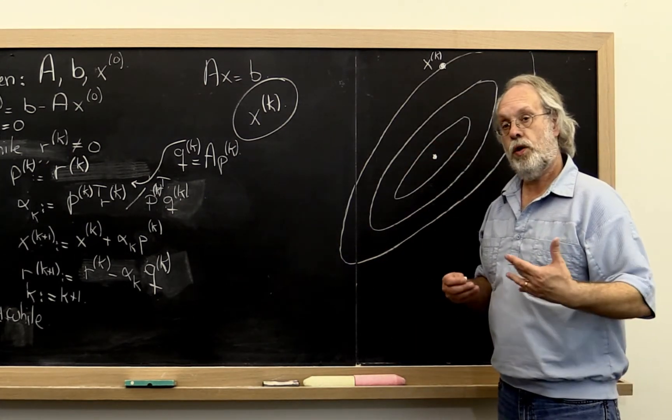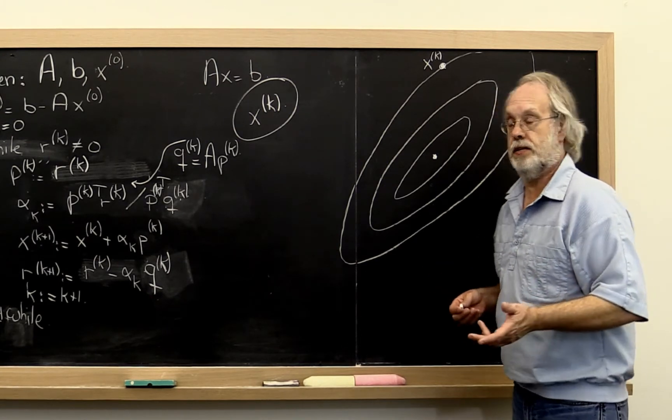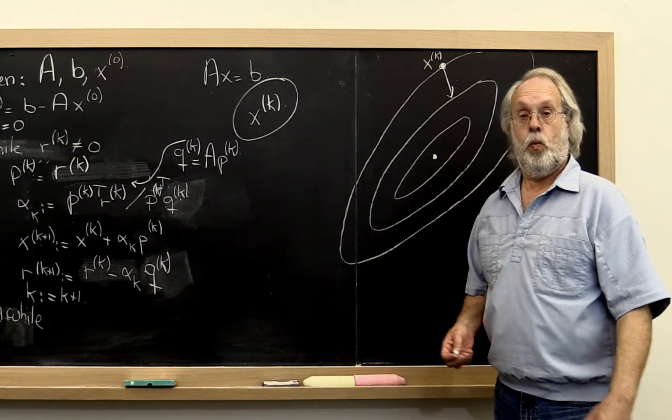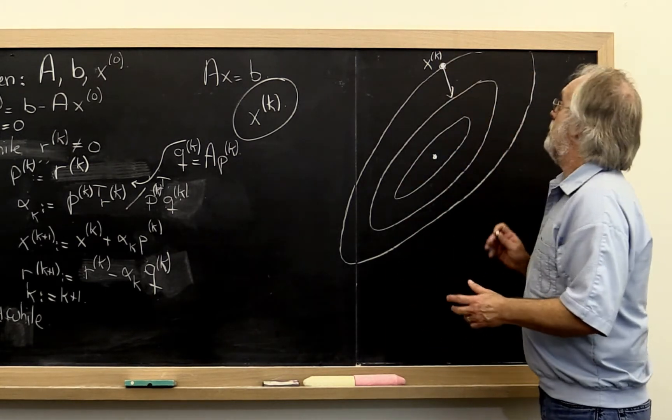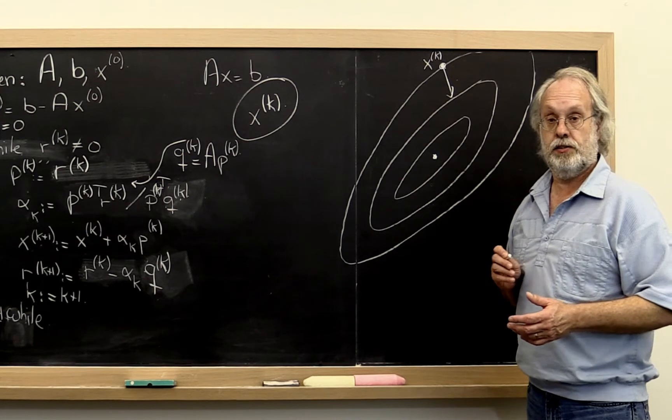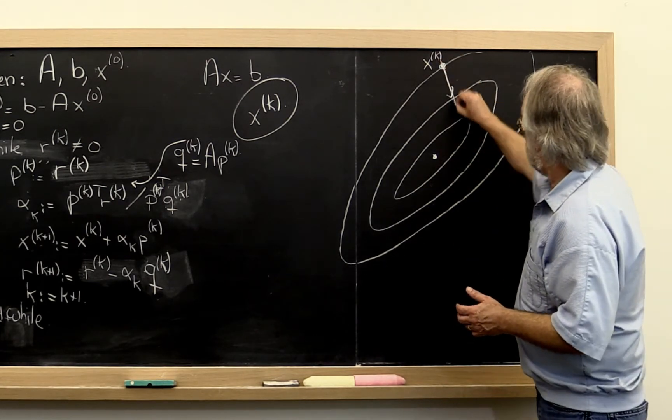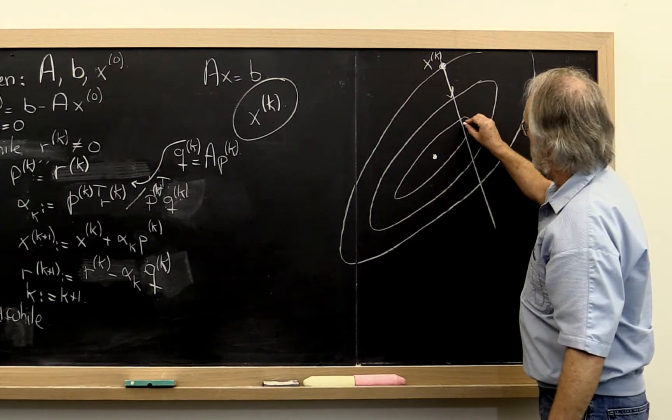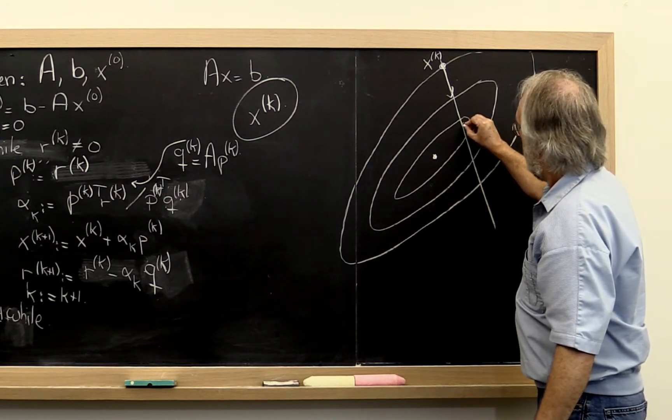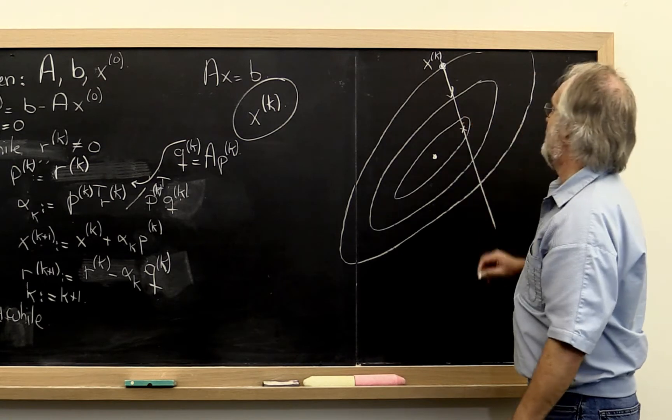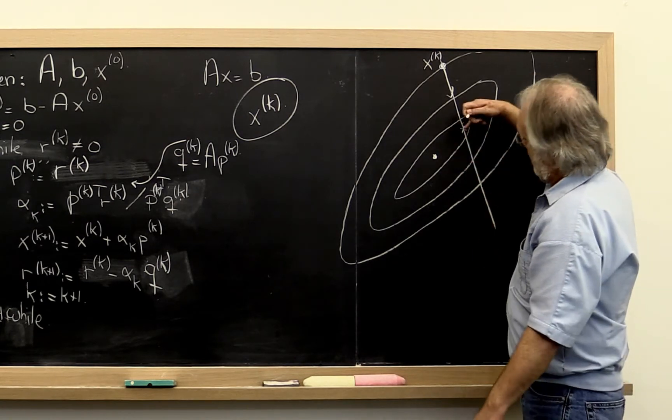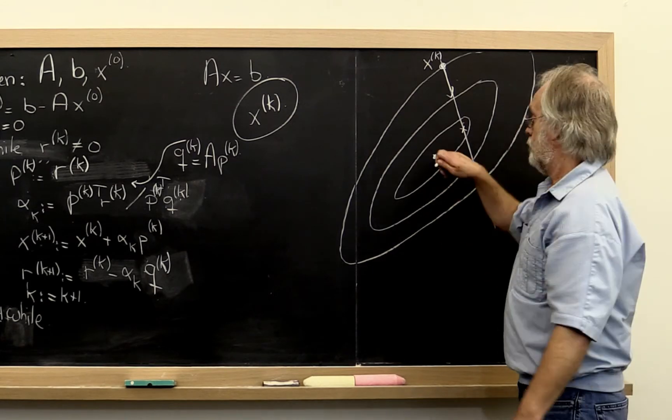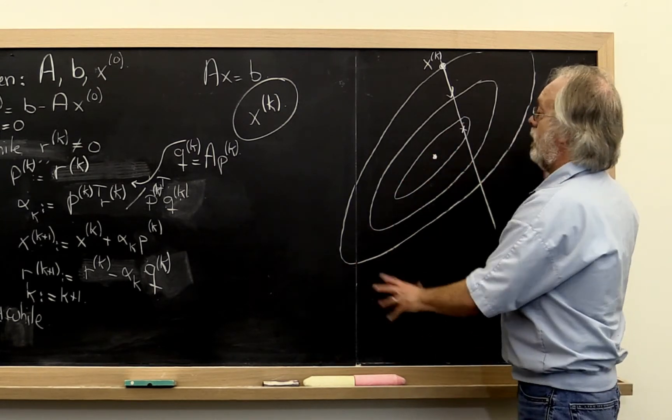Now the problem with the method of steepest descent is that, yes, the gradient takes you in the direction where you decrease the function fastest. And what that means is that in this direction you have this parabola and then you find the minimum in that direction. Now it may seem like in the next iteration you would then directly home in on the solution, at least if this is a problem in two variables.